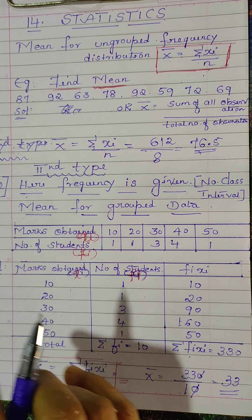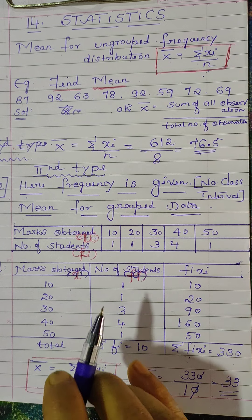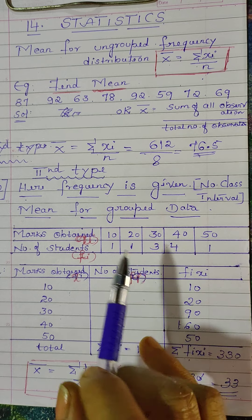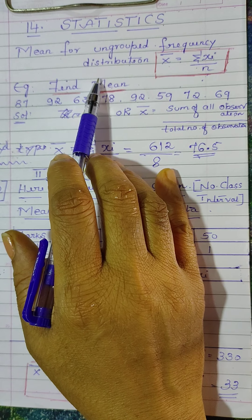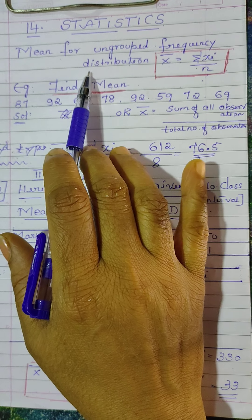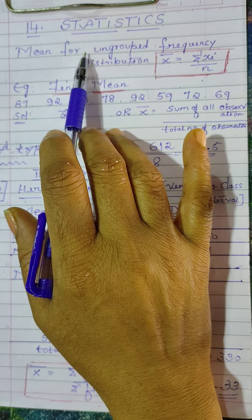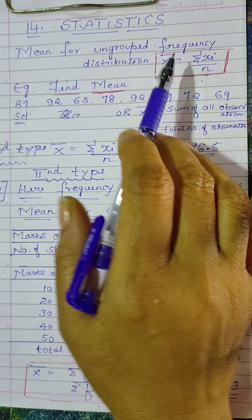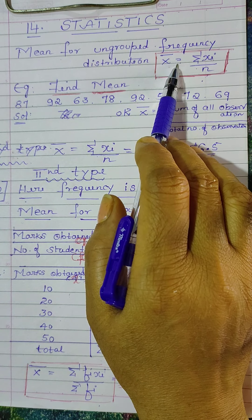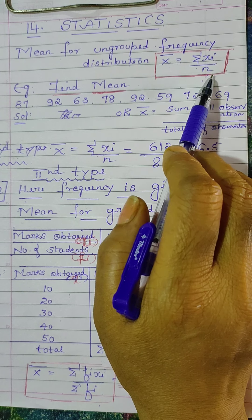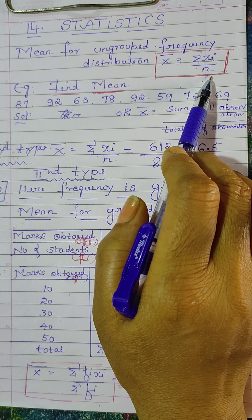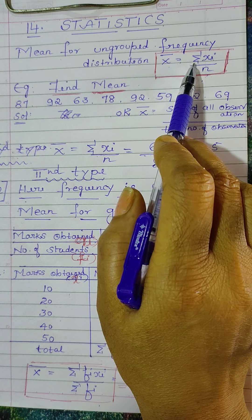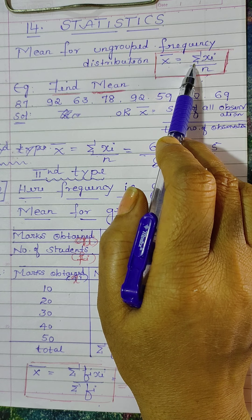Hello students. Today we will learn the 14th lesson of math, that is Statistics. In 9th standard you already studied about how to find the mean of a distribution using the formula x̄ = Σxᵢ / n. Here in statistics language, sigma ka matlab hai total.